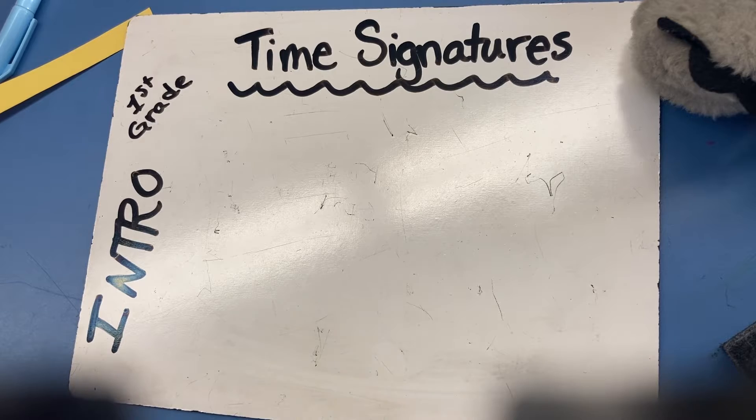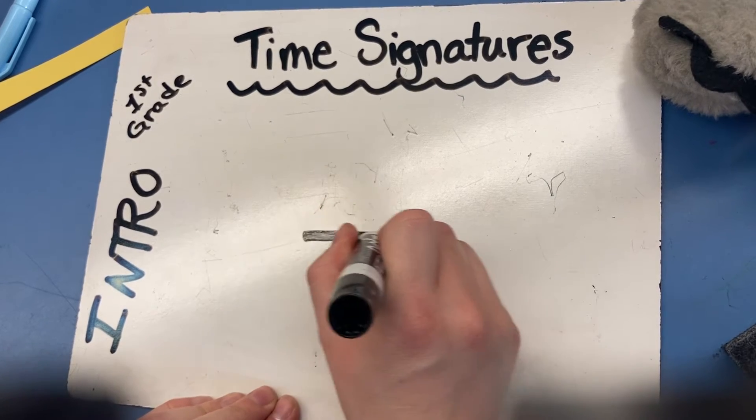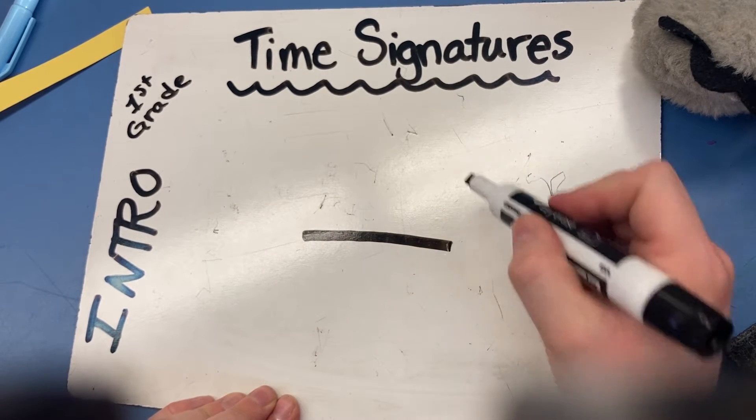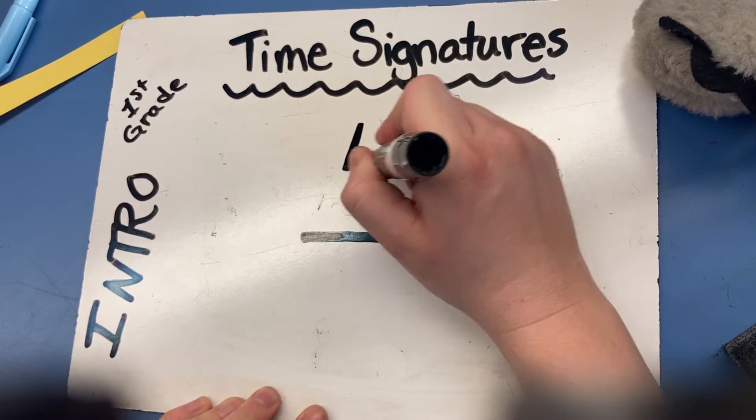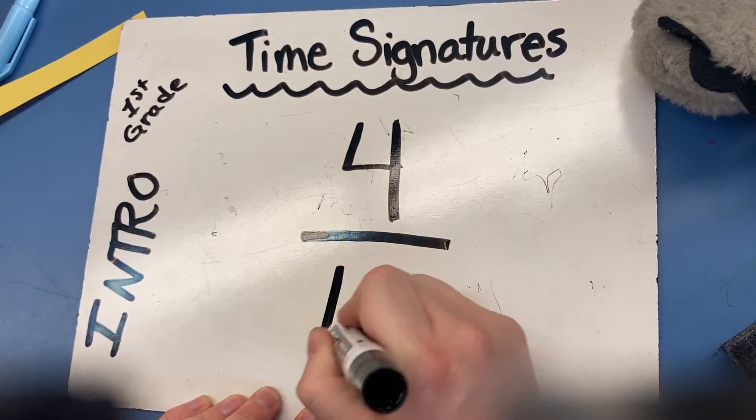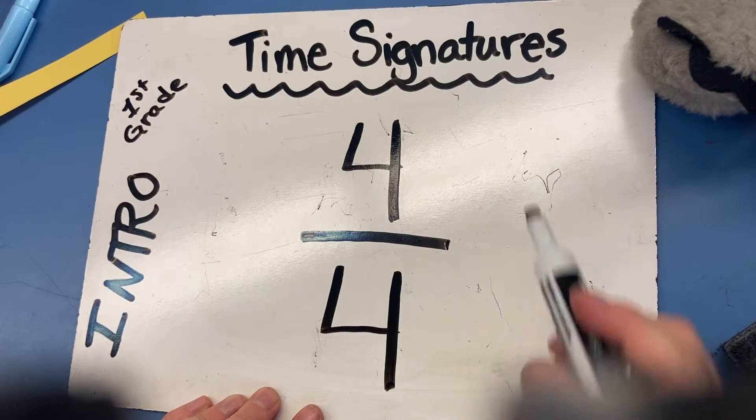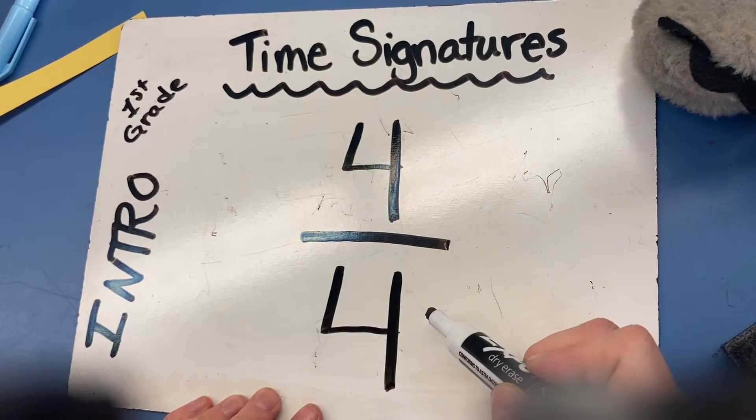Ladies and gentlemen, when we're talking about time signatures, it's always going to have a line and a number over the line and a number under the line. Let's look at our most basic time signature. This time signature is called 4-4.